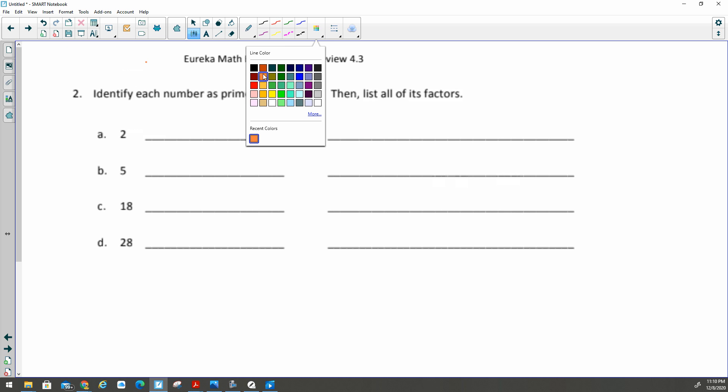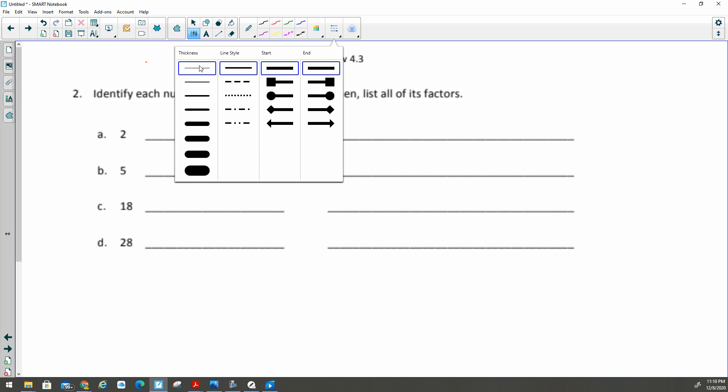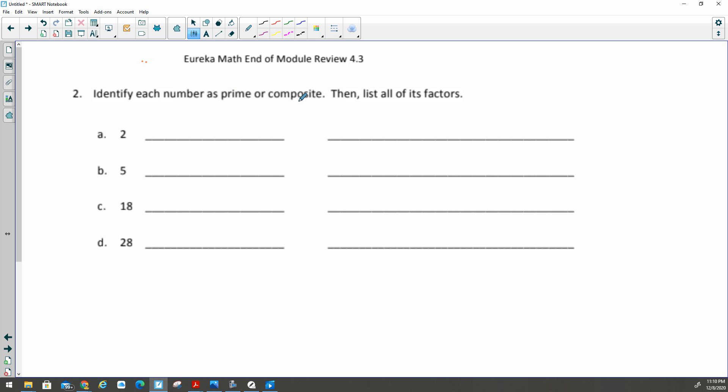So number 2 says to identify each number as prime or composite, then list all of its factors. I like to list the factors first because that's going to tell me if the number is prime or composite. There are some rules with factors: you need to list them from least to greatest, and don't repeat.